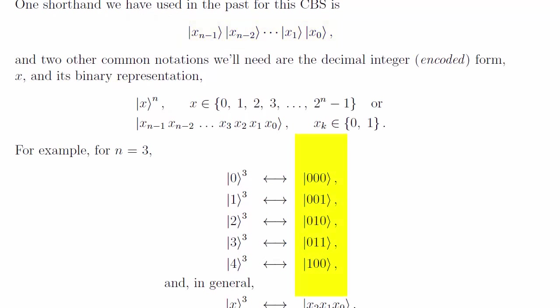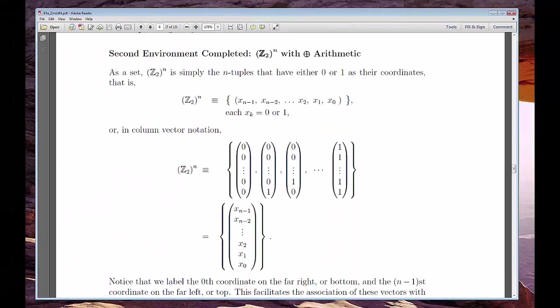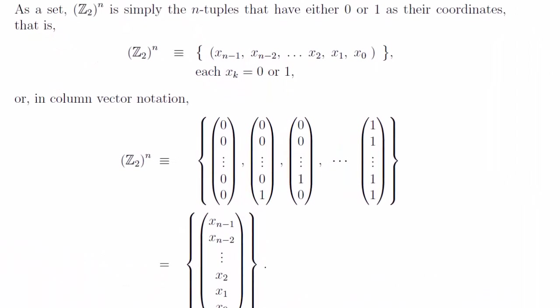We've met different ways to express them. That notation remains in force, it's the most common. These CBS kets can be aligned with a totally different vector space, the finite vector space of n-tuples whose values are either 0 or 1. And that's our second environment.